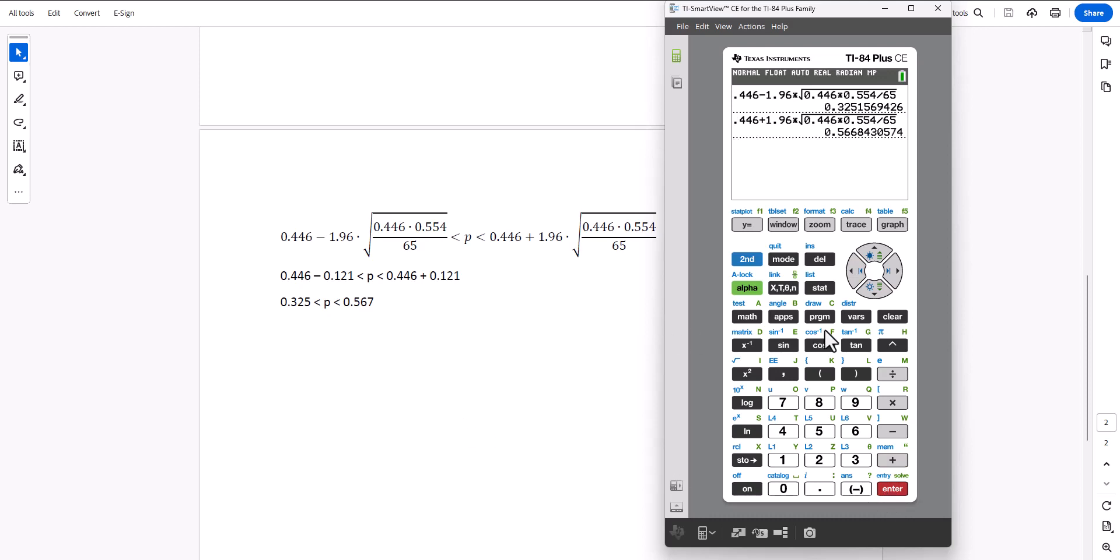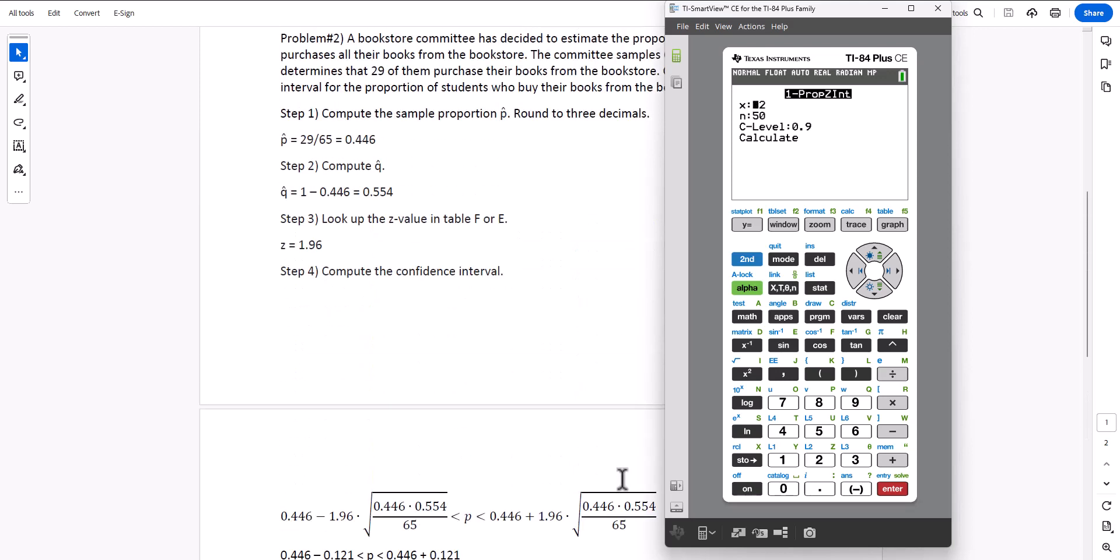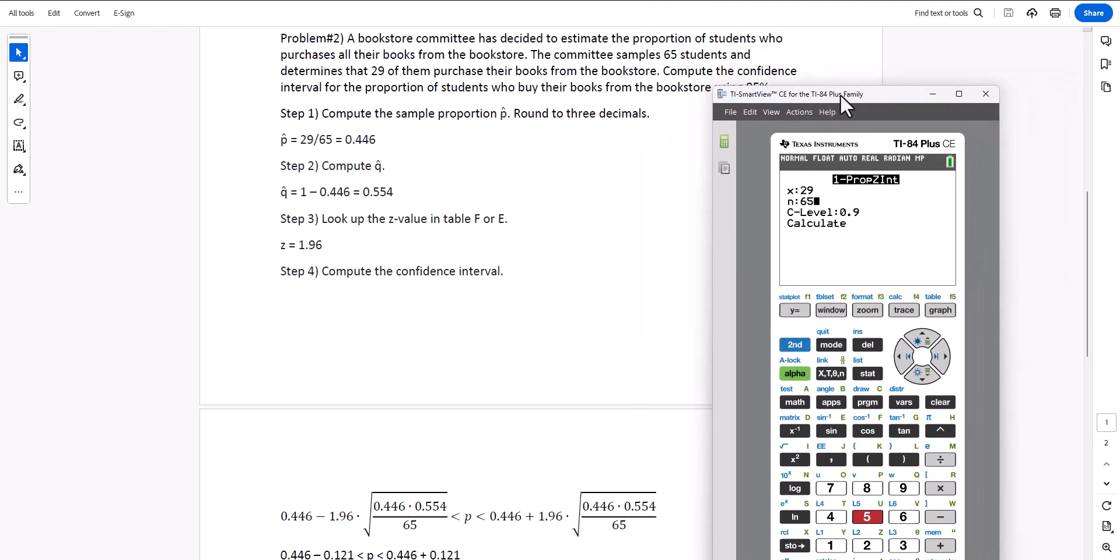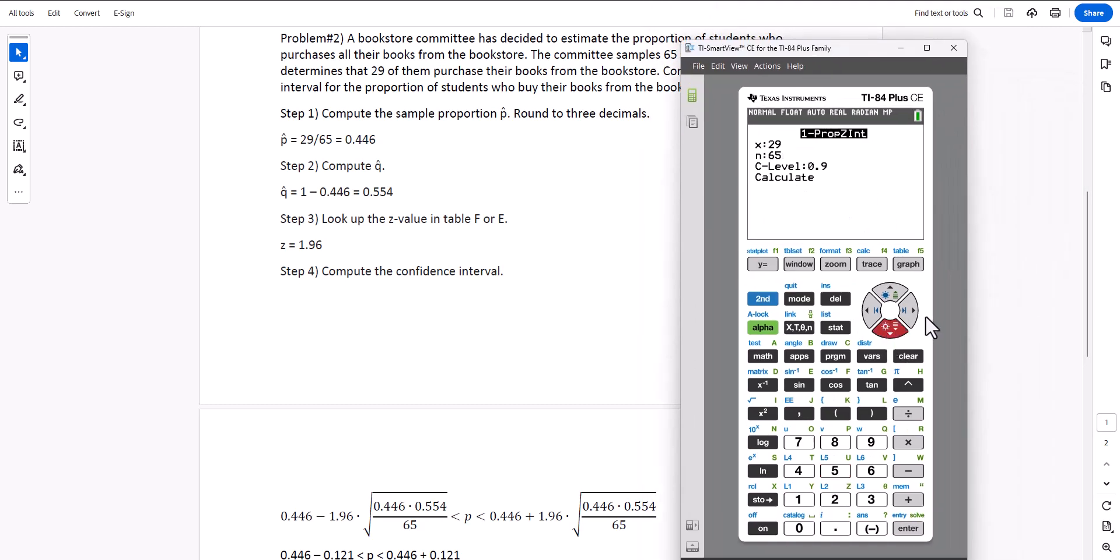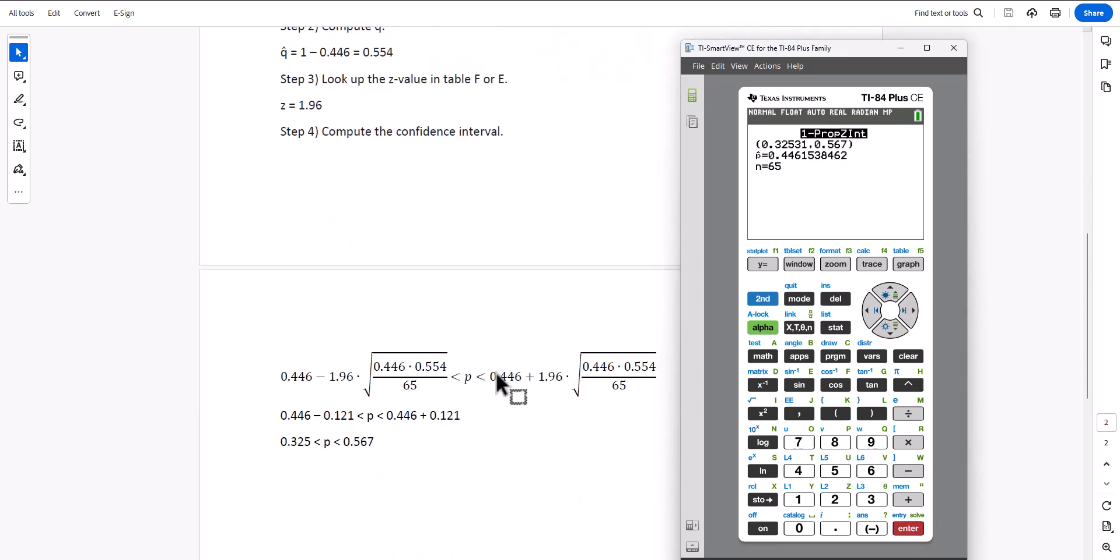Another way of calculating this, we type stat or click on stat, select test, go down to option A, hit enter. Let's go back to our original x-value, that's 29. Go down for n, it's 65, and then type in the confidence level, that's 0.95. Finally, select calculate, and then we can compare our results.